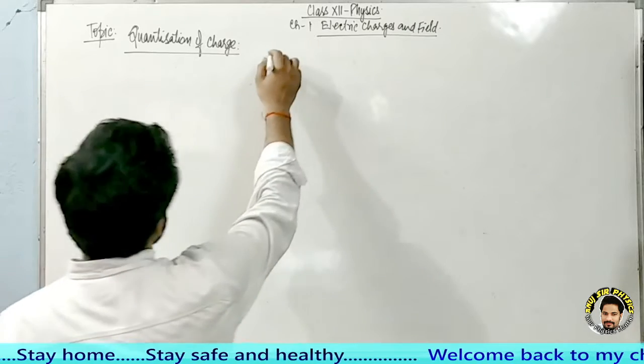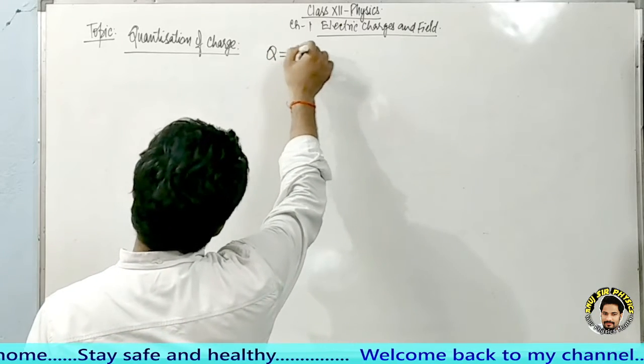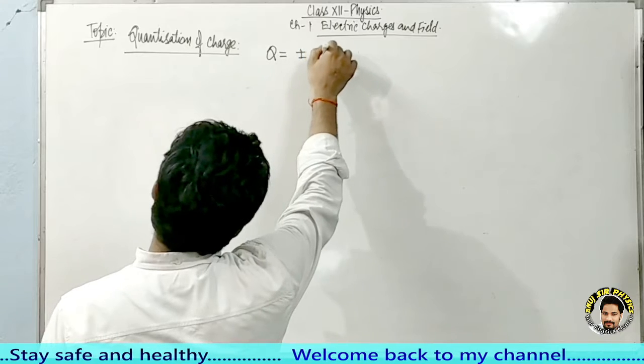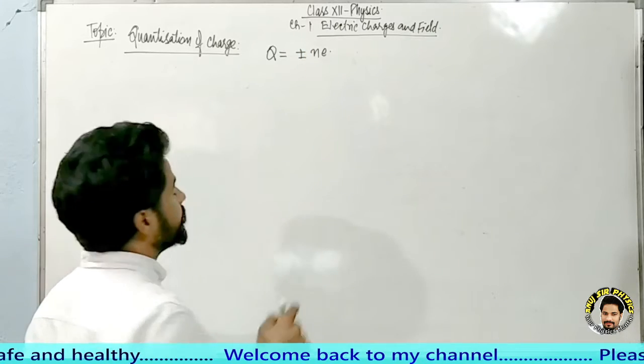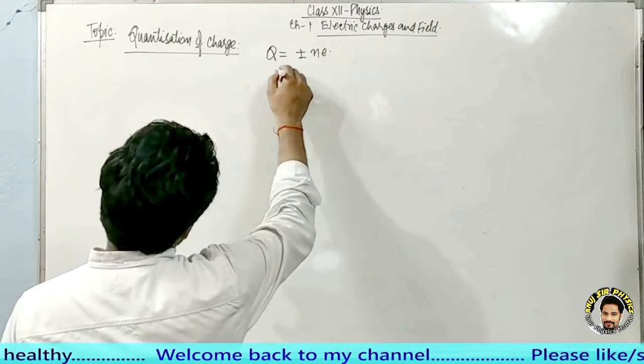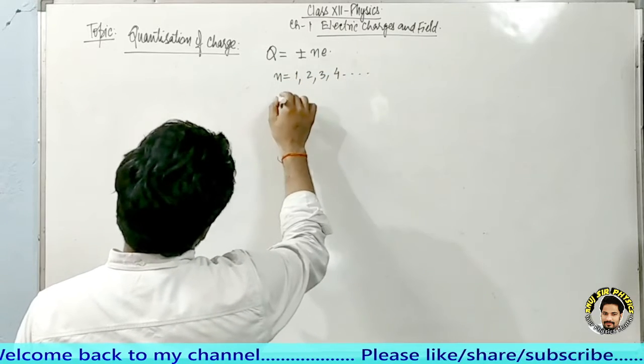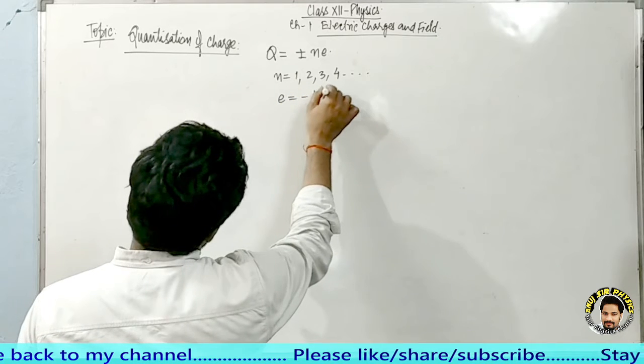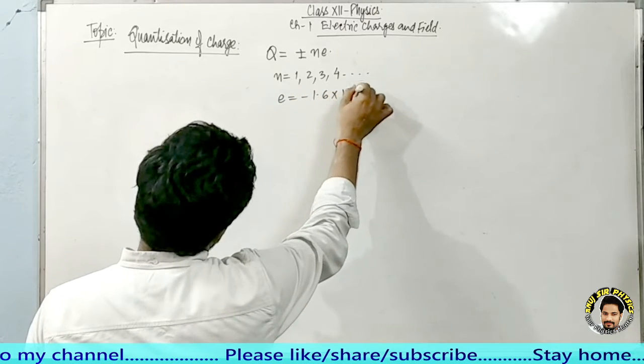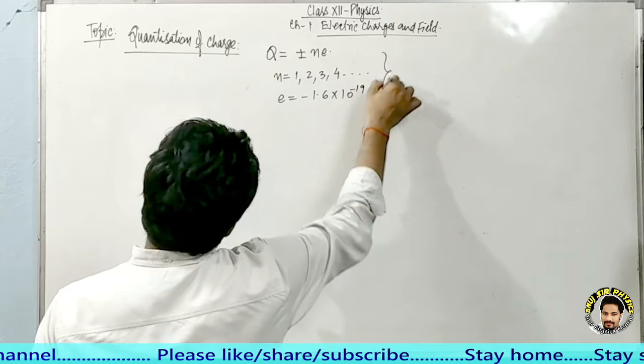The formula we use here is Q = ±ne. The value of n is 1, 2, 3, 4, and so on. E ki jo value hoti minus 1.6 into 10 to the power of minus 19 coulombs hoti hai.